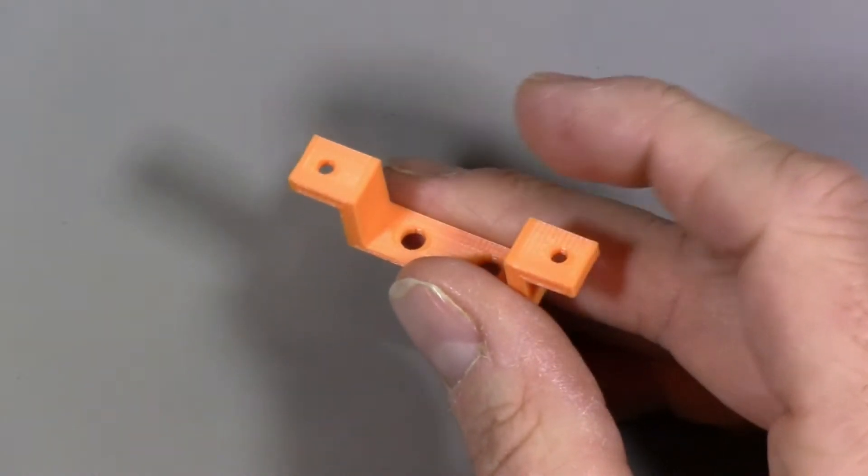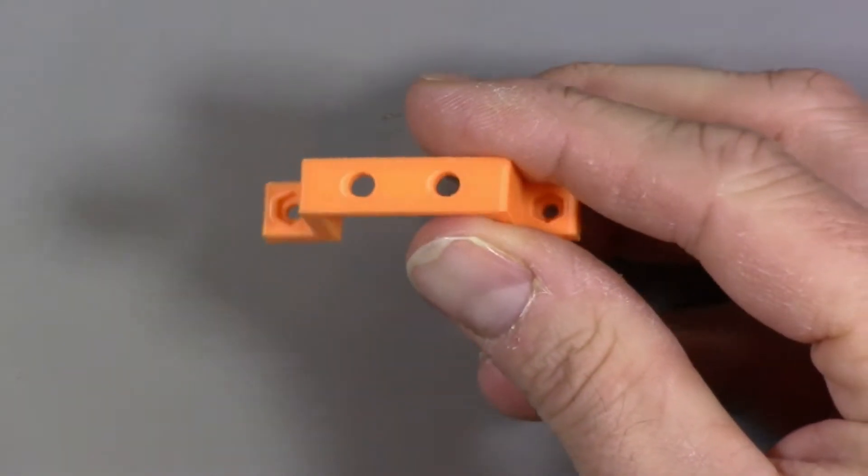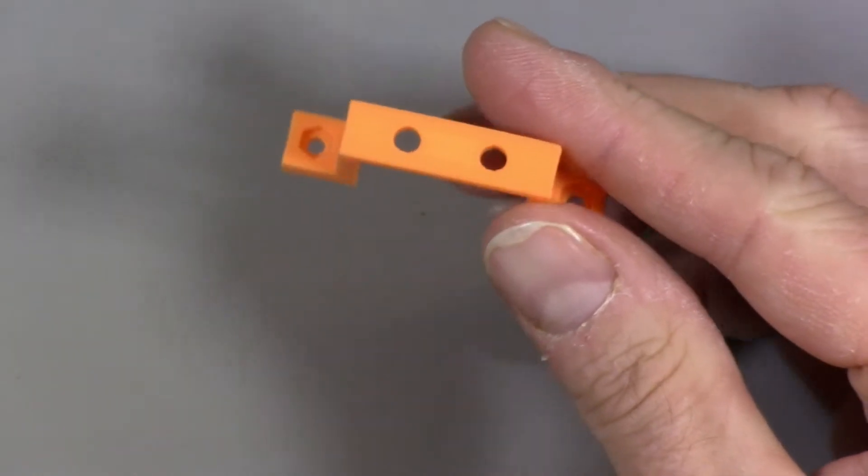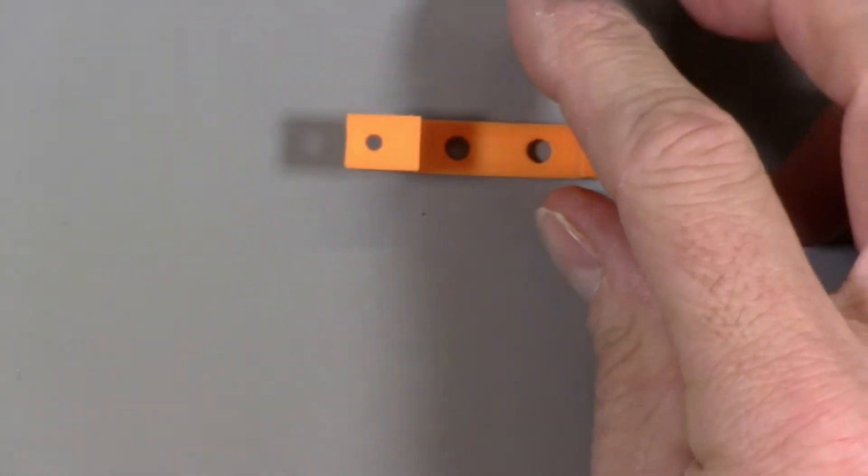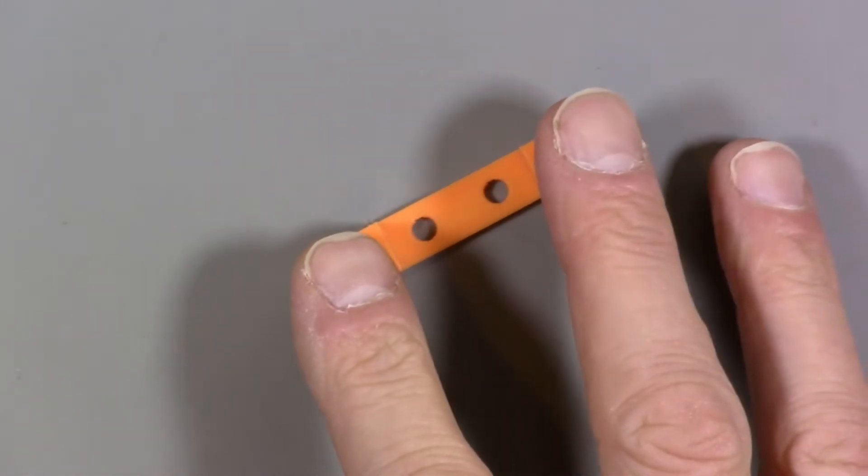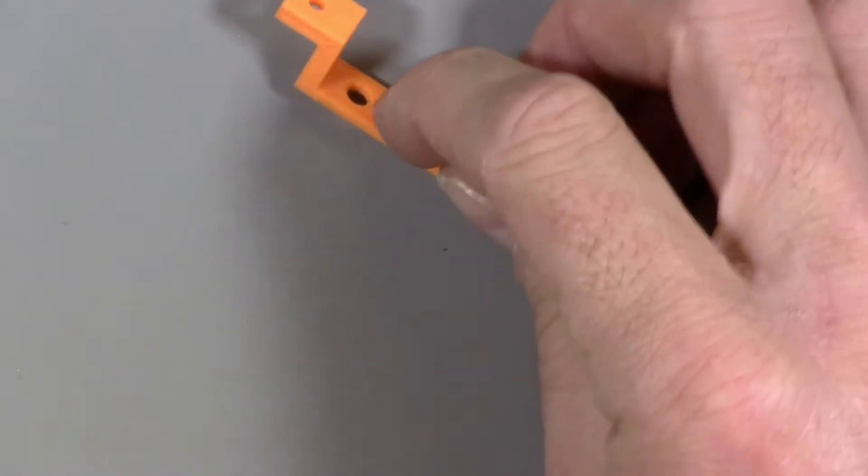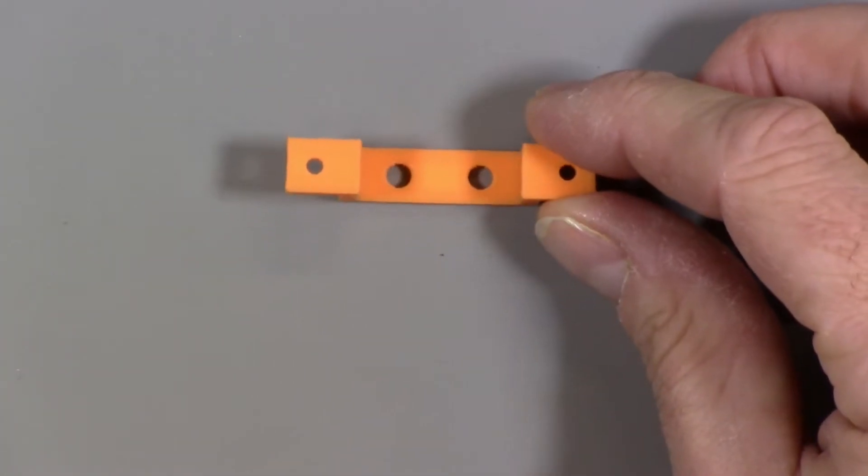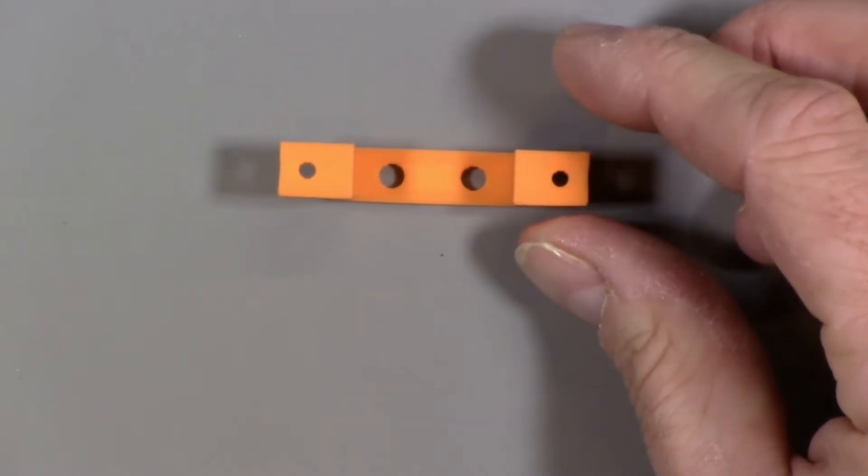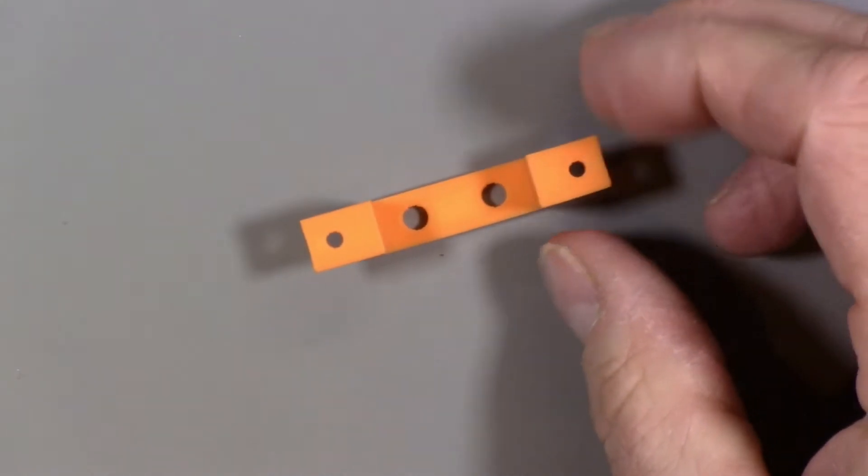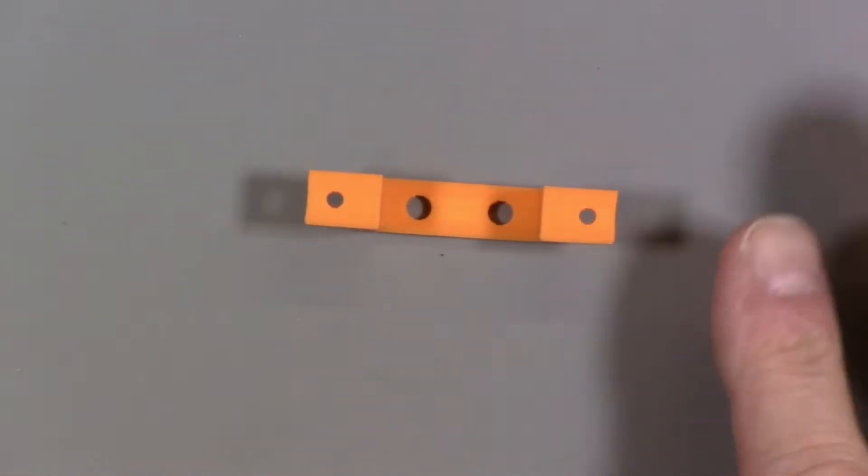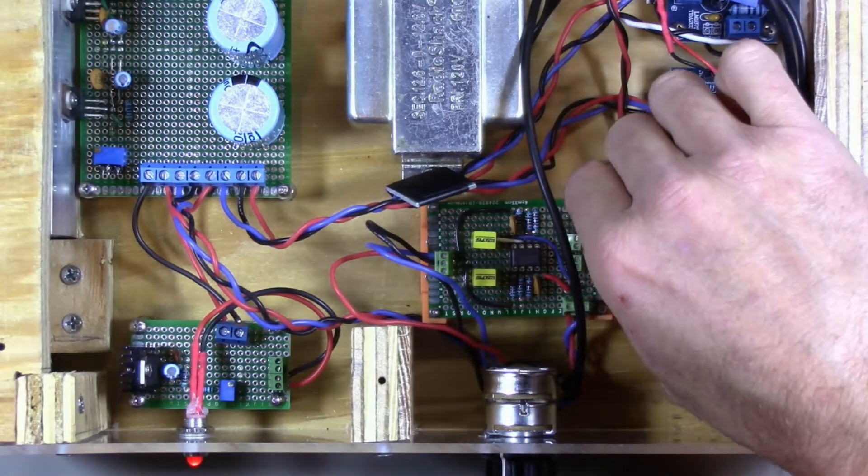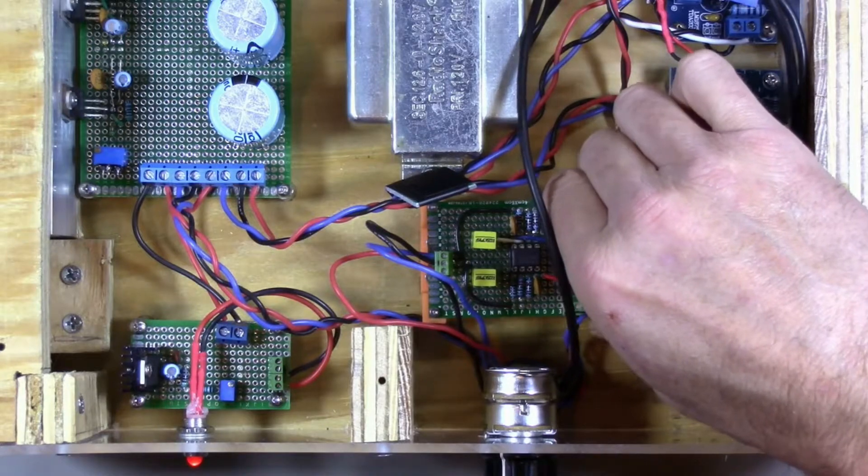All right, so here's one of the printed brackets. I think it turned out pretty nicely. This is actually without any finishing. There weren't really any strings or other things that need to be cleaned up. It's not mechanically the strongest design, but it's going to be plenty strong for just holding the preamp proto board in place. Okay, so let's get this mounted in the amplifier enclosure. All right, so here is the preamplifier in the enclosure mounted on the brackets, and that is nice and secure. That is not going anywhere.